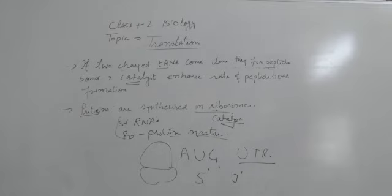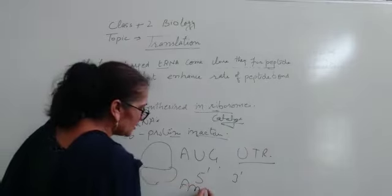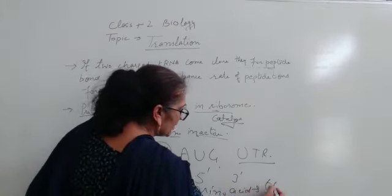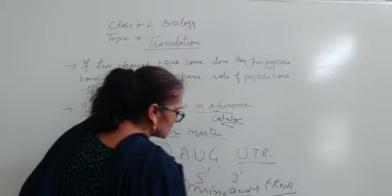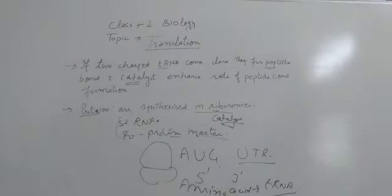The ribosomes proceeds to the elongation phase of the protein synthesis. Ab joh ribosomes hain, woh aapke protein synthesis ka process shuru ho ga hai. Ab is stage pe kya hooga? The complexes composed of amino acid linked to TRNA. Ab is stage pe joh amino acids hain. Amino acids, woh iske saad link ho jayenge? TRNA ke saad. They are linked to TRNA. Amino acids TRNA ke saad bata linked ho jayenge.